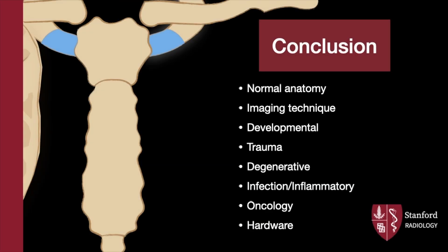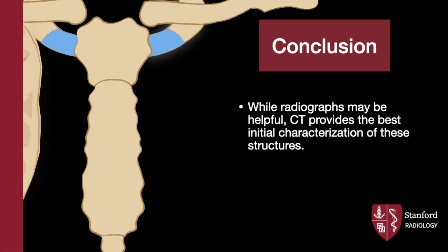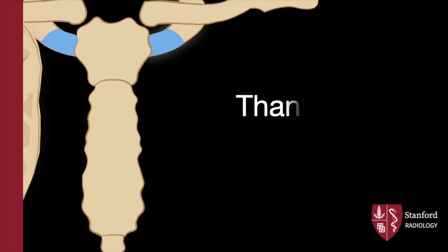That was our overview of the sternum and sternoclavicular joints. This was by no means a comprehensive overview, but hopefully you're now more equipped to tackle these structures. Remember that while radiographs may be helpful, CT provides the best initial characterization for these structures. See you next time!